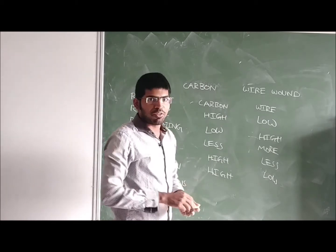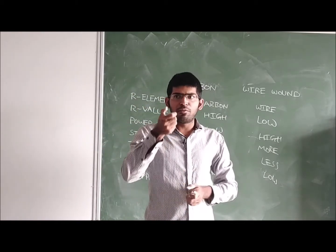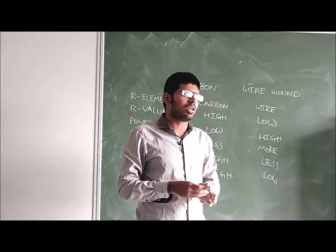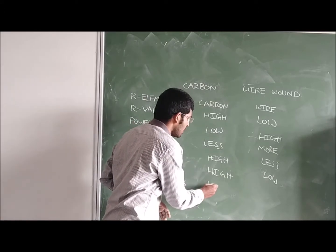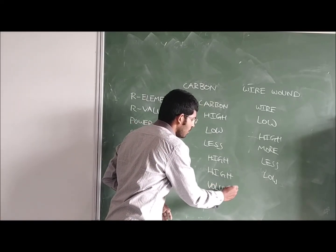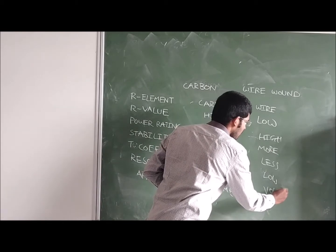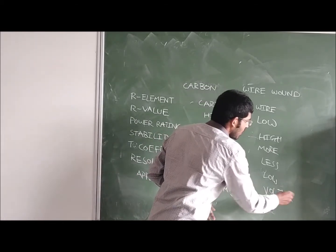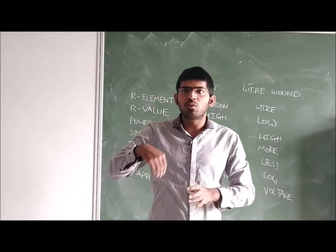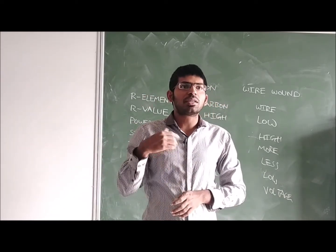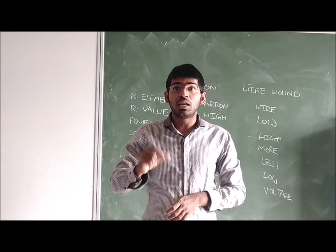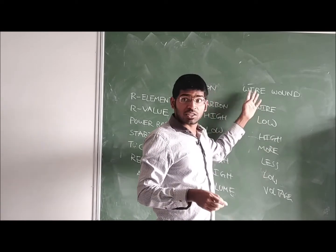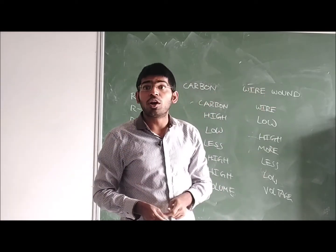Applications: whenever we want to change the volume — for example on a TV — we use the carbon potentiometer for volume control. When we want to change voltage, we do not want it to change abruptly, as higher voltages may damage our circuit. So for slow, controlled voltage changes, we use the wire wound potentiometer.